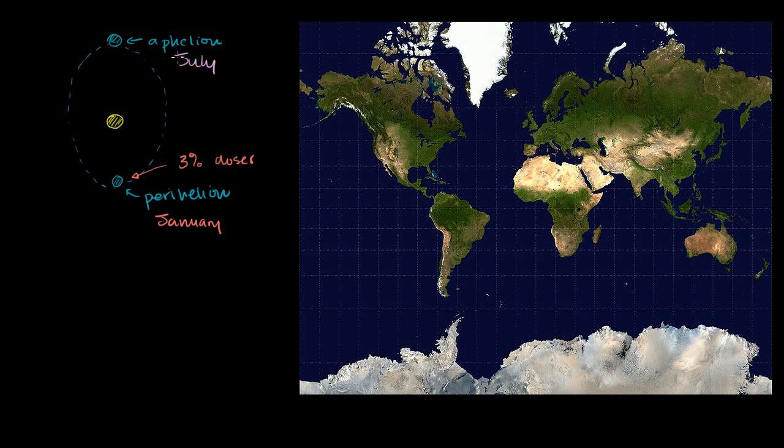Now, based on this, this might lead to an interesting question. So let's think about January when we're at perihelion and let's think about July when we're in aphelion. And let me draw a quick globe right over here. Let's make that the equator and I'll draw it in both situations.